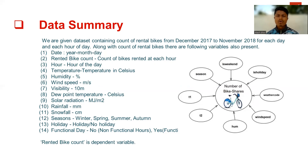Hour: hour of the day. Temperature: temperature in Celsius. Humidity. Solar radiation in MJ per m². Rainfall in mm. Snowfall in centimeters. Season: winter, spring, summer, autumn. Holiday: holidays or no holidays. Functioning day: no functional hours or functioning. Rental bike count is the dependent variable.